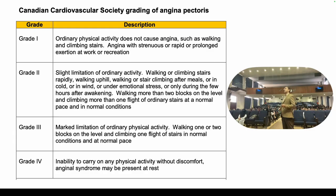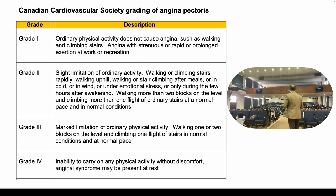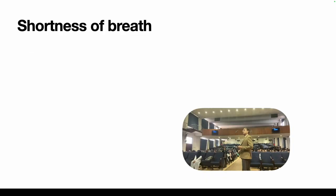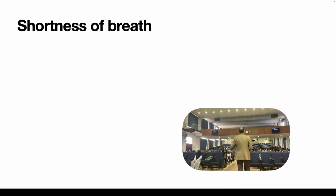This is the Canadian Cardiovascular Society grading of angina — grades 1 through 4. Grade 1 angina occurs only with moderate to severe activity with no limitation on ordinary activities. Grade 4 angina may be present even at rest. The intermediate grades are in between.